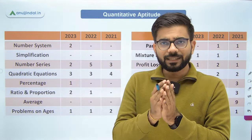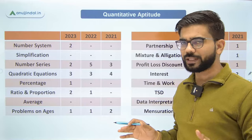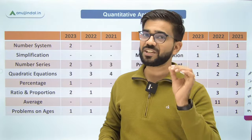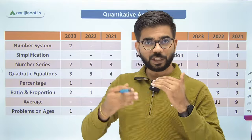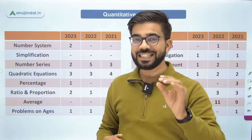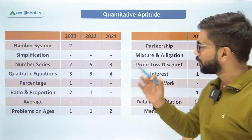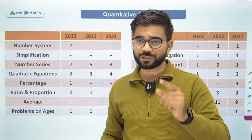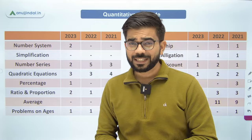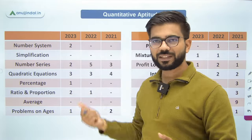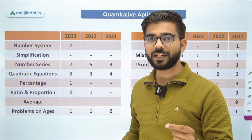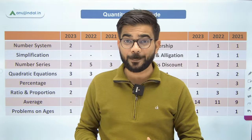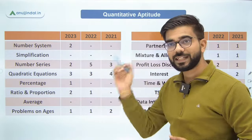In today's session I will discuss all four sections. In RBI Grade B you have four sections: Quant, Reasoning, English, and General Awareness. I will discuss them in the same order. First, the Quantitative Aptitude section — believe me, this is the most difficult section for any aspirant in RBI Grade B, because other sections' sectional cut-offs can be cleared, but Quant's sectional cut-off is very hard to clear.